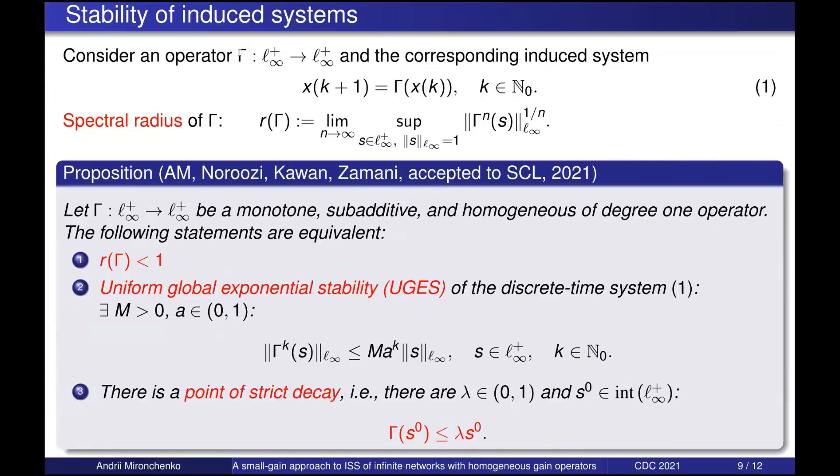But now we need to understand a bit more about this operator. So now take any homogeneous and subadditive operator, not necessarily gain operator, and consider the corresponding discrete time system. Since gamma is homogeneous of degree one, we can introduce the concept of a spectral radius just by this Gelfand formula. And now the following holds. The spectral radius is less than one if and only if this system is uniformly globally exponentially stable. And this holds again if and only if there is a so-called point of strict decay for the operator gamma, which is a point in the interior of L infinity plus, such that gamma at this point decays uniformly in all components with uniform decay rate. And now this will be very important for our next result, which is the main result for this talk.